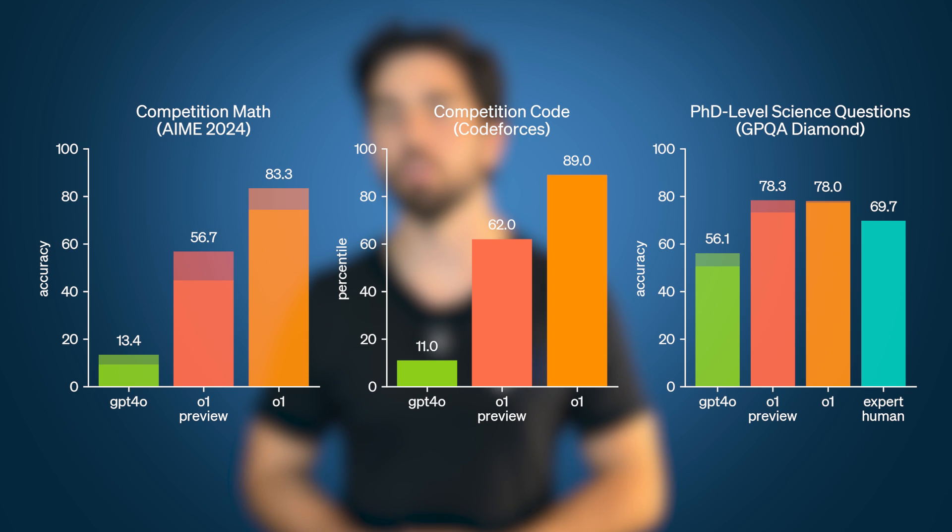First, what really sets O1 apart from models like GPT-4O is obviously its built-in reasoning capabilities. In testing, O1 outperformed GPT-4O on reasoning heavy tasks like coding, problem solving, and academic benchmarks.